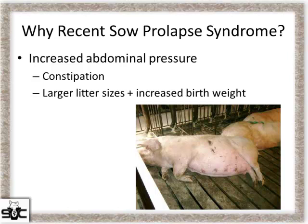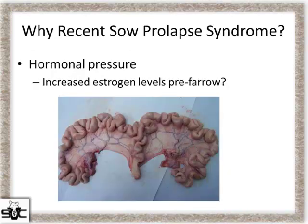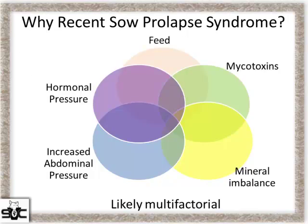Hormonal pressure — could the increased total born and increased birth weight lead to increased estrogen levels pre-farrow, loosening the cervix, causing increased uterine contractions, and increasing the chance for prolapse? All of these are best guesses — more research needs to be done. This is our list of potential risk factors, and this is likely a multi-factorial problem. You look at each factor and think about how much of the pie it influences — that's where future research needs to be done to determine cause and effect.